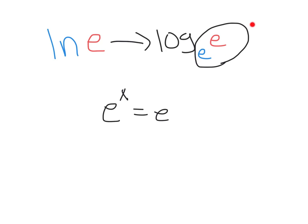Right? Our base to what power equals e, and in fact if we solve that out we can see that x would obviously equal 1, e to the 1 equals e.